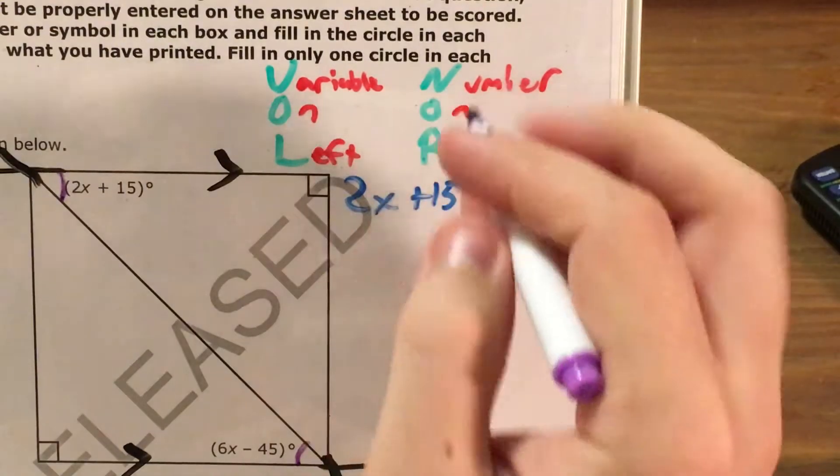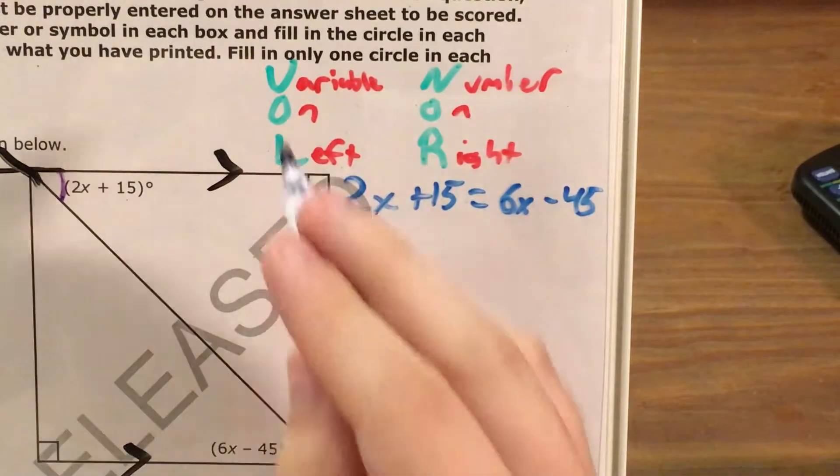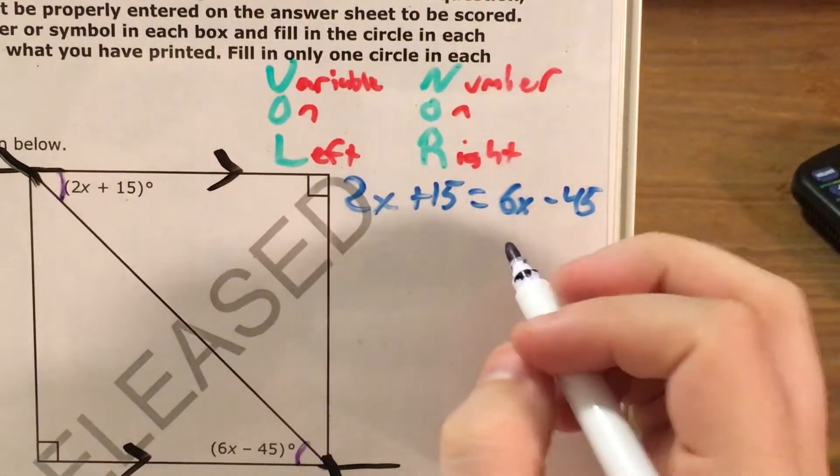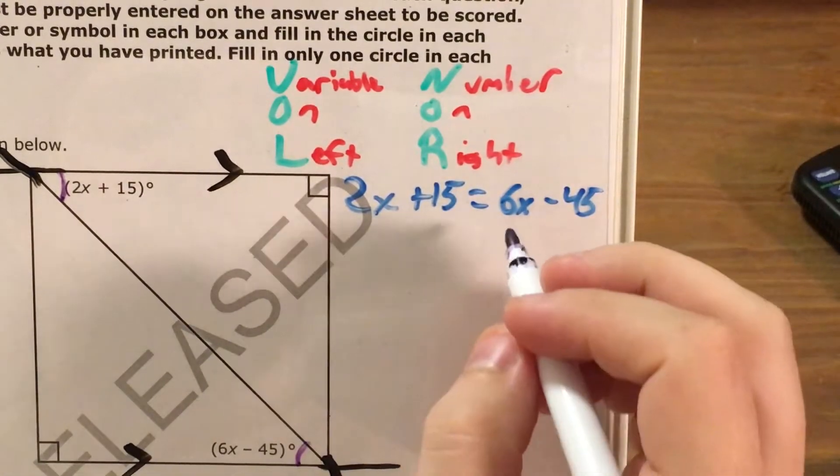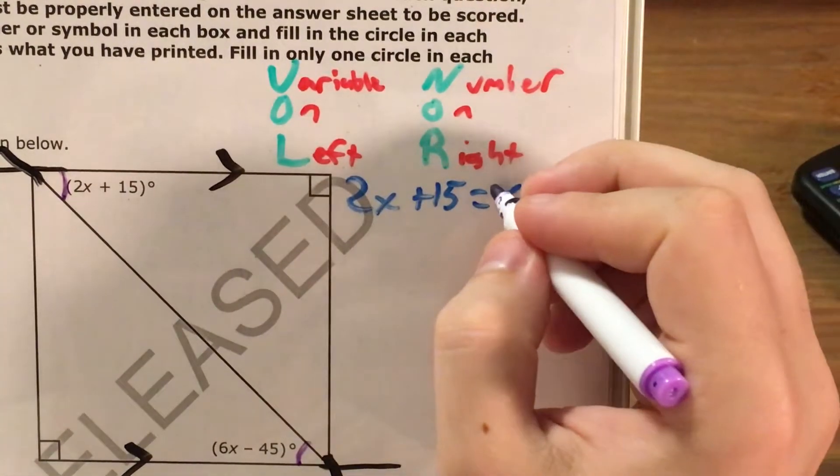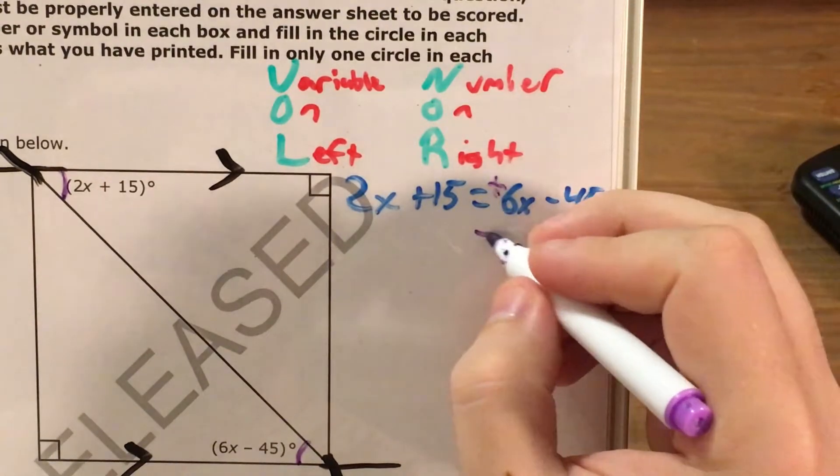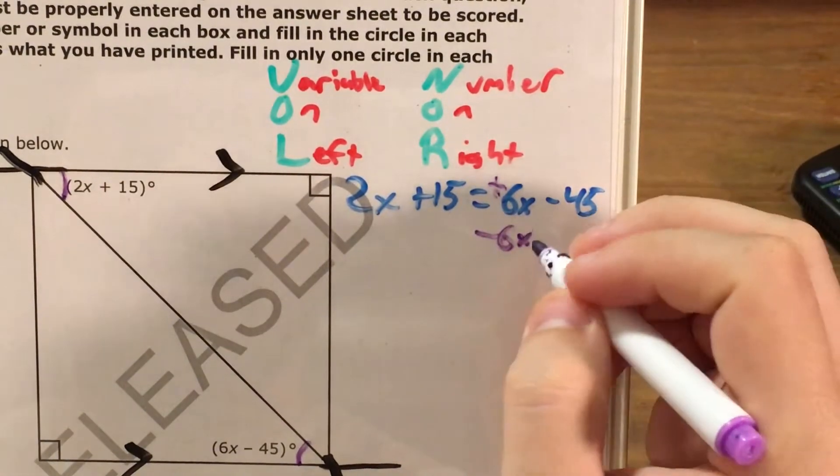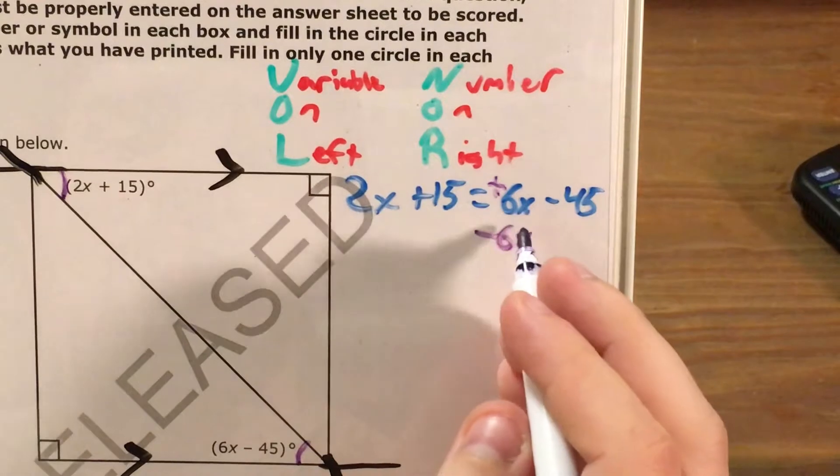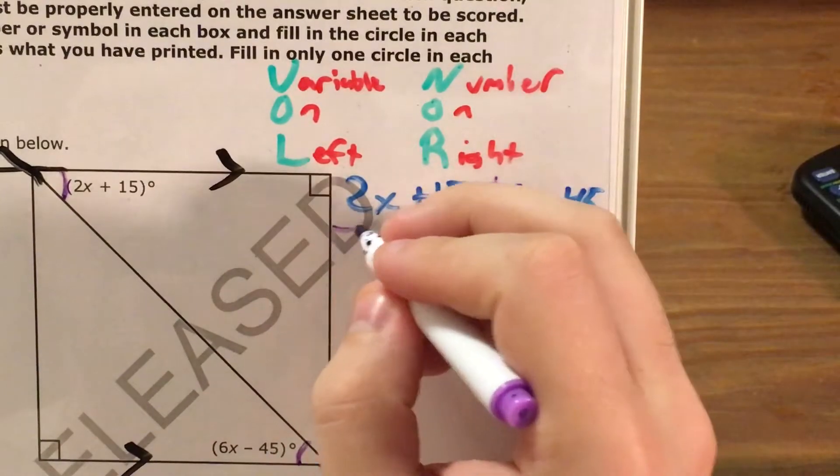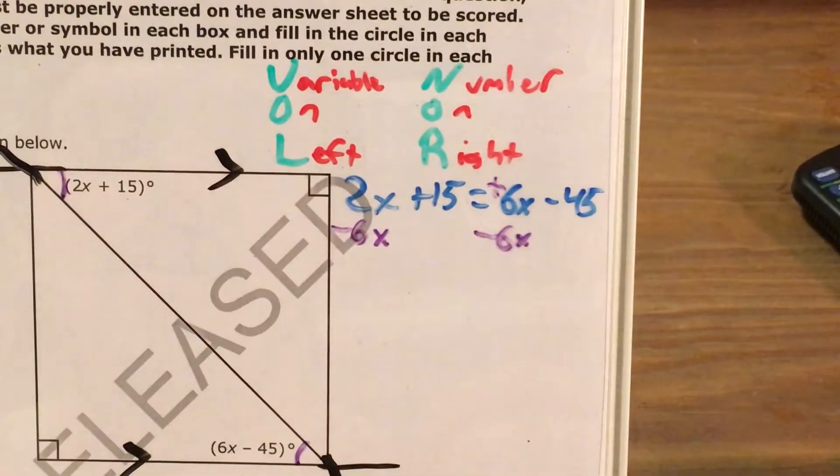So if I'm going to take this strategy and apply it to this problem, I'm going to start by getting all my variables on the left side. I see 6x on the right side and that's the one I don't want. I'm going to remind myself that this is a positive 6x and I'm going to do minus 6x. And whatever I do to the right side of the equation, I have to do to the left side. So that's minus 6x here as well.